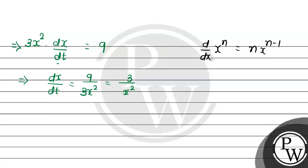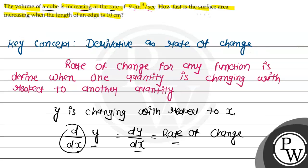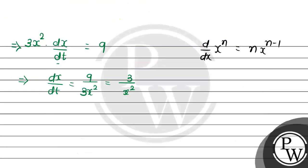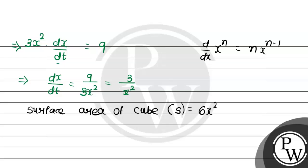Now moving ahead, there is one more condition: we need the surface area increasing when the length of the side is 10 centimeters. The surface area of a cube, capital S, is equal to 6x squared.